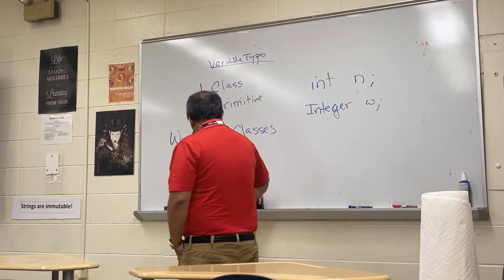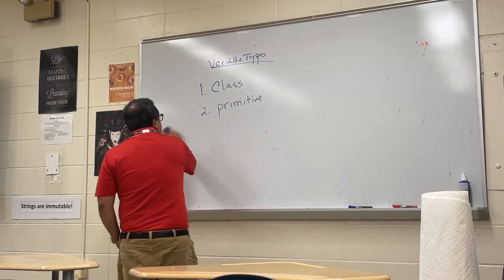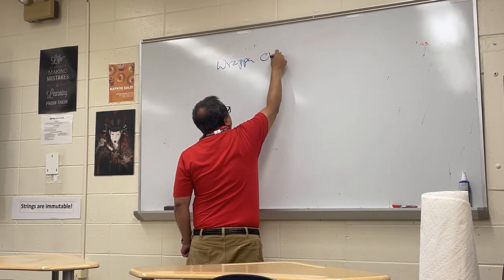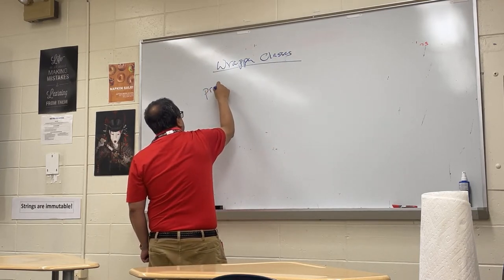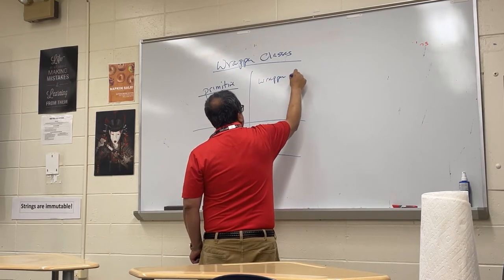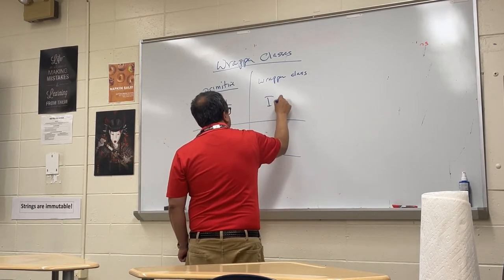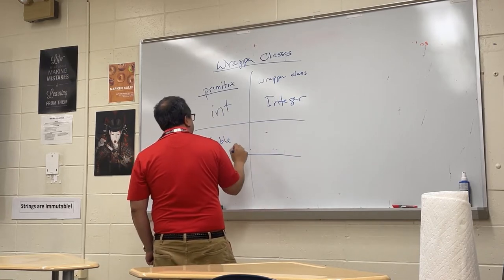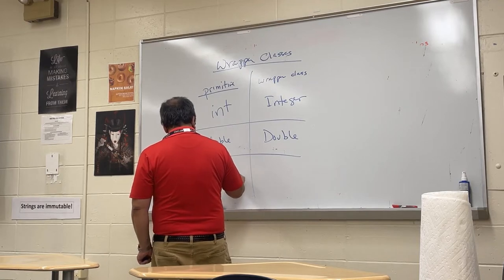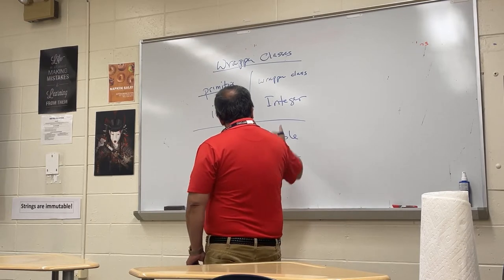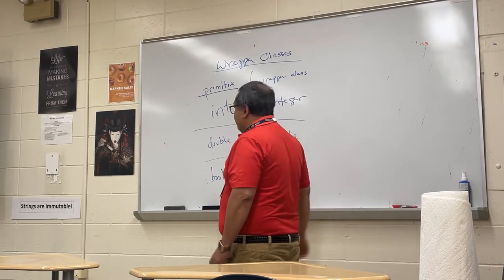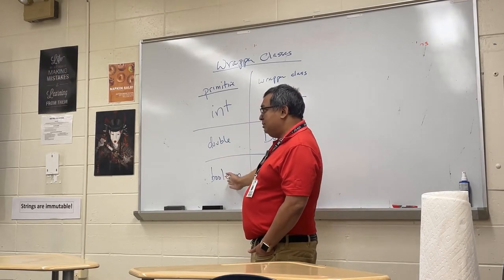Those are the two reasons we need wrapper classes. Here are the three wrapper classes we'll discuss: the primitive int has wrapper class Integer; double has wrapper class Double; and boolean has wrapper class Boolean. Why they changed the spelling for Boolean, I don't know — it would have made more sense to keep it consistent — but that's how it is.